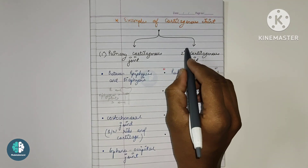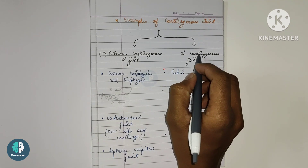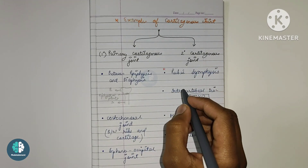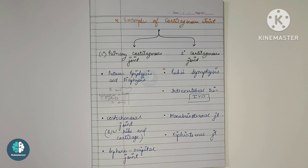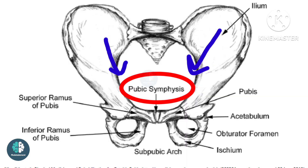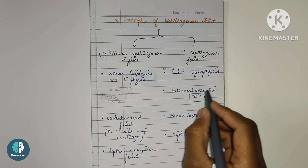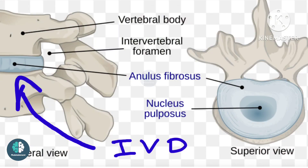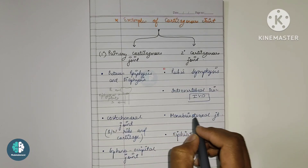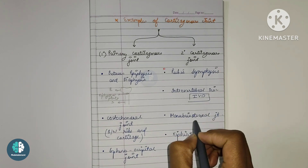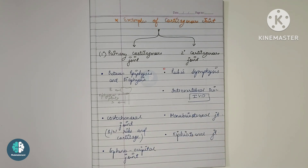Now for the secondary cartilaginous joint, there are various examples. First is the pubic symphysis, which is located in the center of the body in the hip bone or innominate bone. Next is the intervertebral disc, also an example of the secondary cartilaginous joint, abbreviated as IVD. Next is the manubriosternal joint, which is located between the body of the sternum and the manubrium, as you can see in the picture.